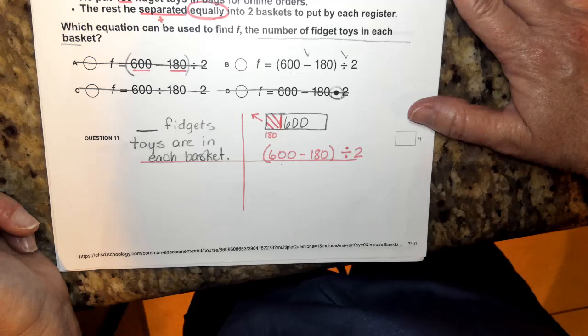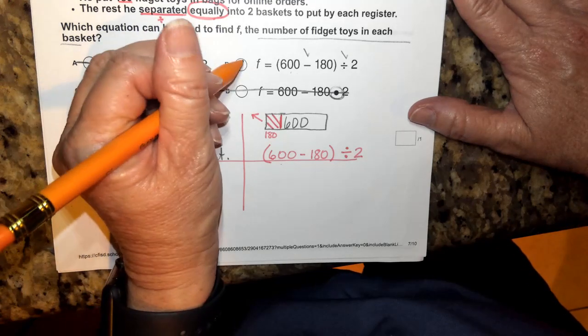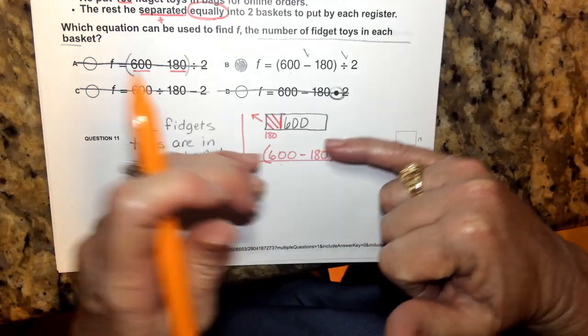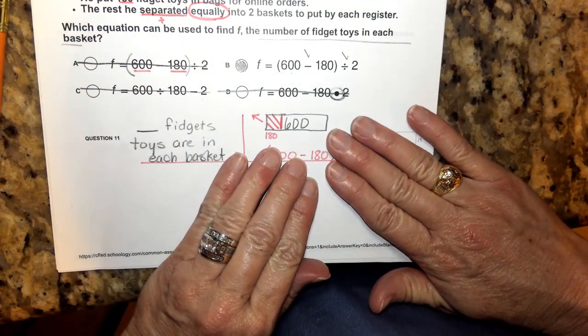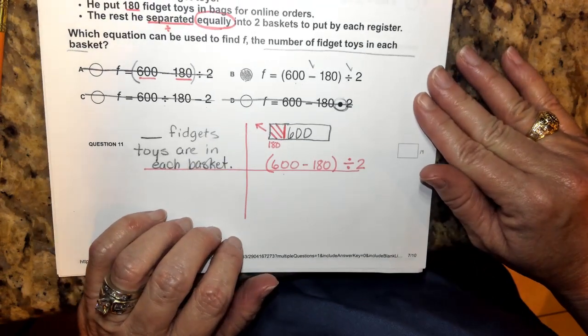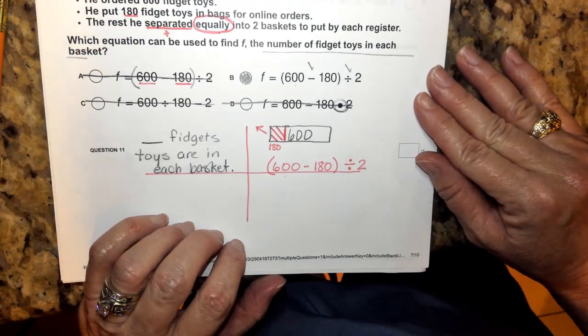So the correct equation that we would want to pick would be B. And just simply thinking about your picture and what actions are happening with that picture will help you decide on the best equation to pick in the future. Well, thank you.